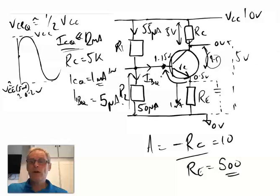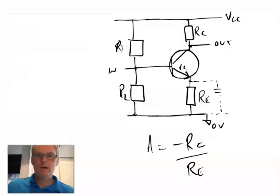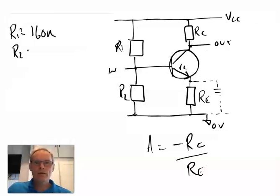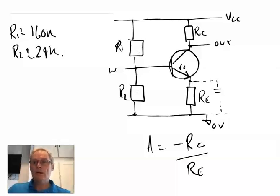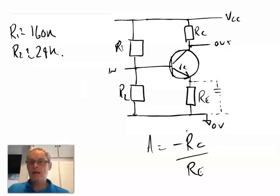Knowing the currents and the desired base voltage of approximately 1.15 volts, we can calculate R2 = 1.15V / 50µA ≈ 24 kilohms, and R1 = (10V − 1.15V) / 55µA ≈ 160 kilohms. So we have R1 ≈ 160kΩ, R2 ≈ 24kΩ, RC = 5kΩ, and RE = 500Ω. We can verify the gain: RC/RE = 5k/500 = 10. ✓